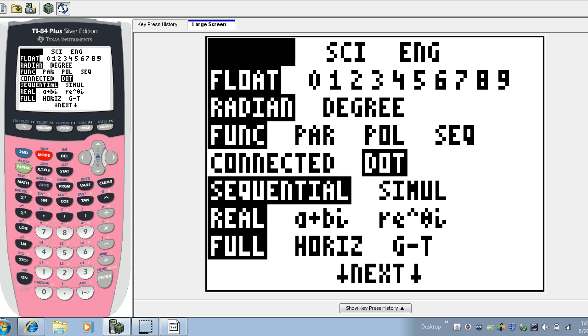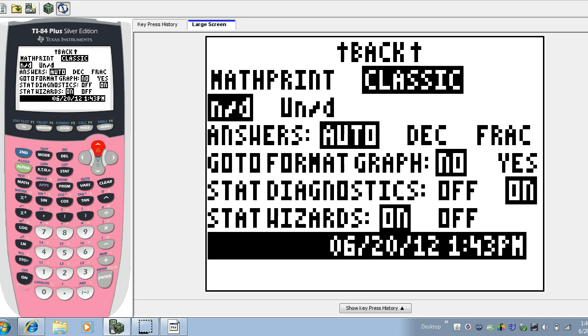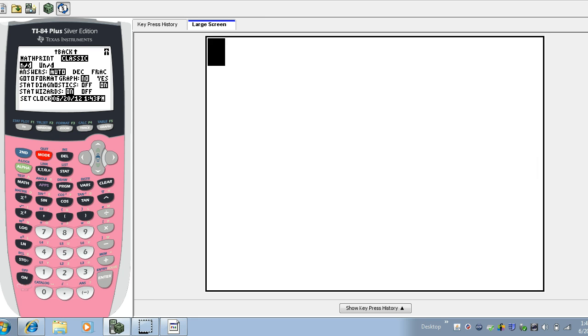I have my calculator set up in what is referred to as classic mode. So if you hit the mode button, you can see we've got classic mode here instead of math print. I prefer classic mode when I do my calculations so that I can see all the parameters on my screen.